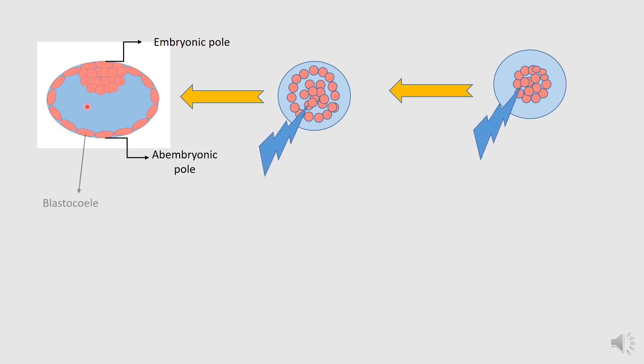Now, the trophoblast where the inner cell mass gets attached, it divides actually. And that divides and, okay, where it is contacted, this point here, the trophoblast cells, they will divide. And those cells are called the polar trophoblast. That area is called the polar trophoblast. And the rest where there is no attachment of the inner cell mass or the embryoblast, those areas are called the mural trophoblast.